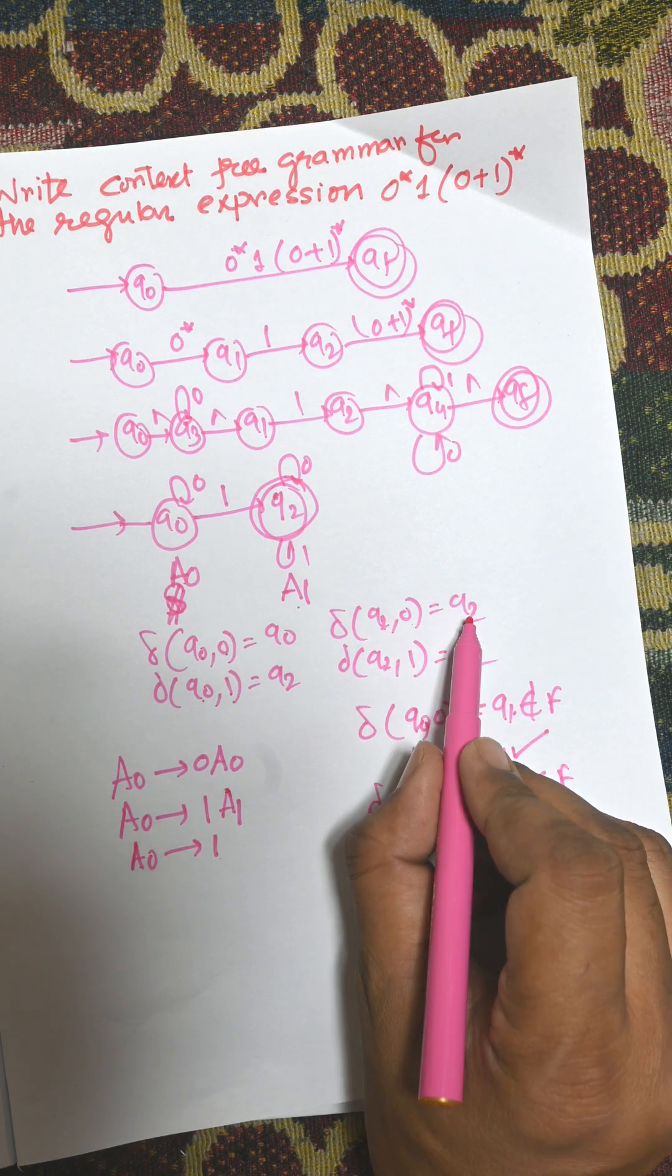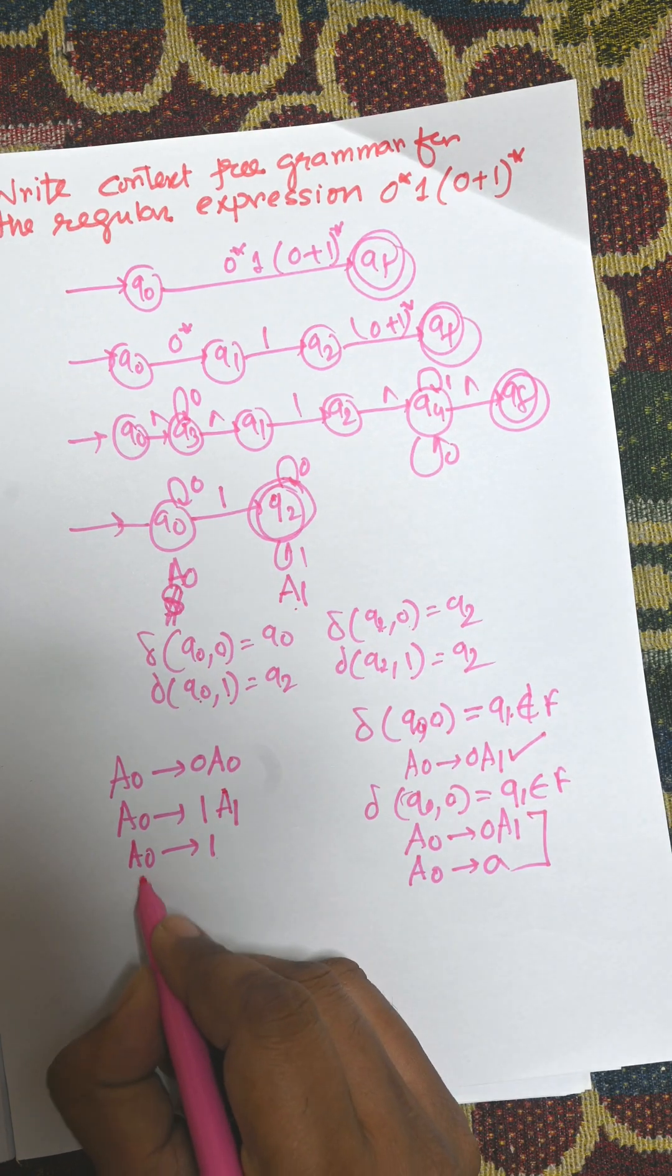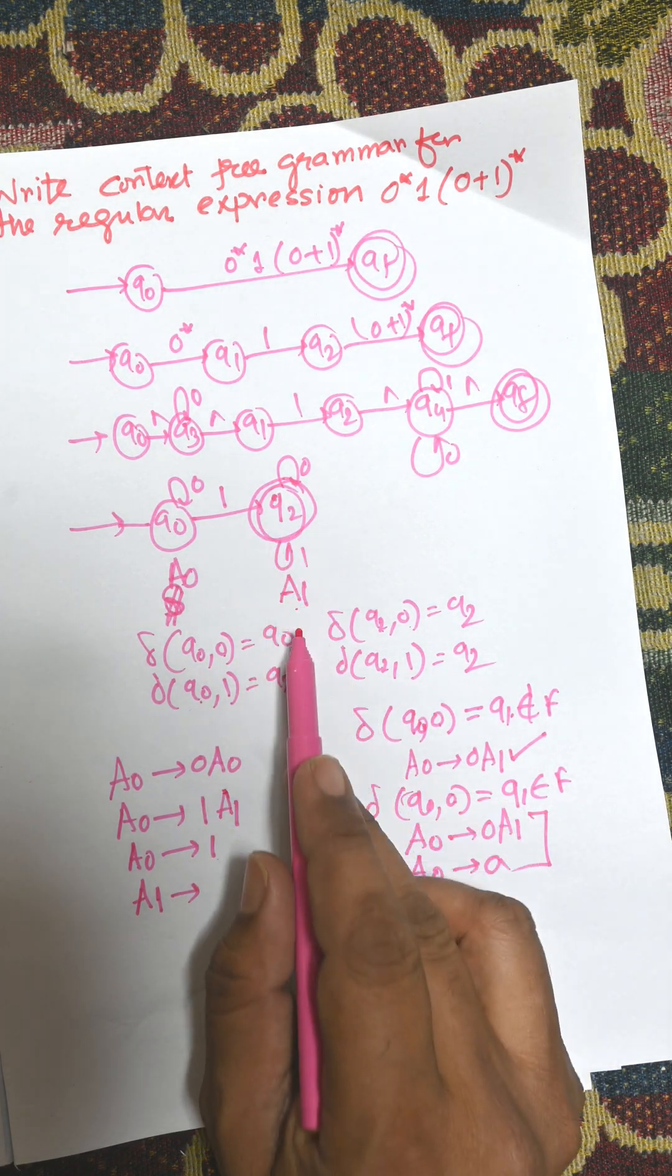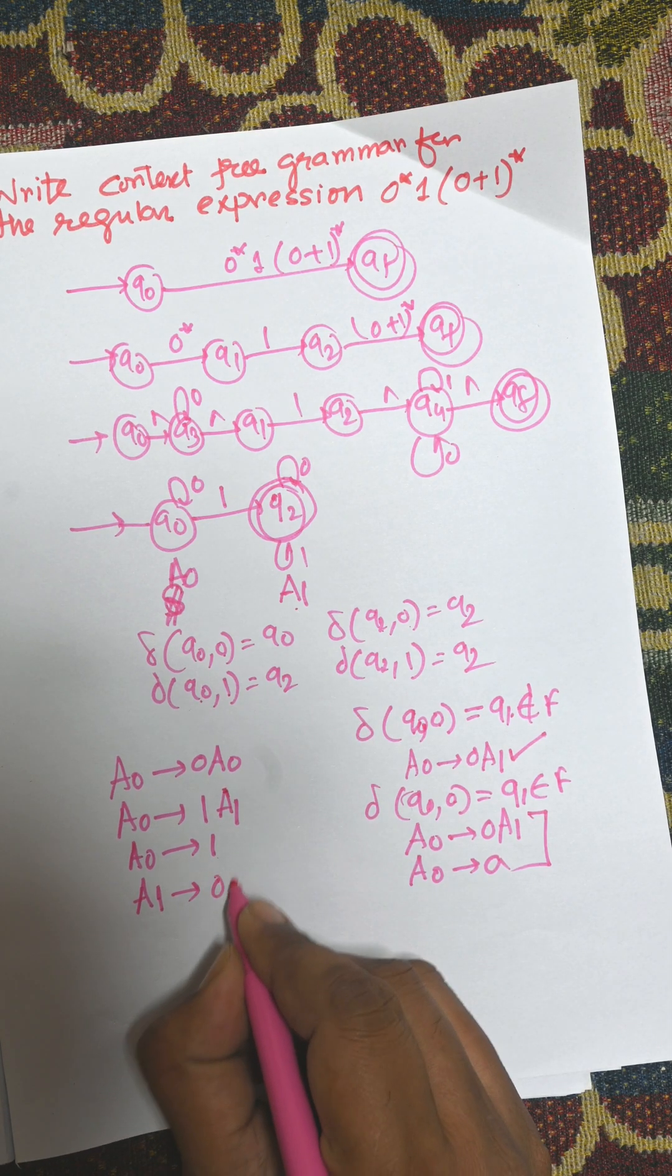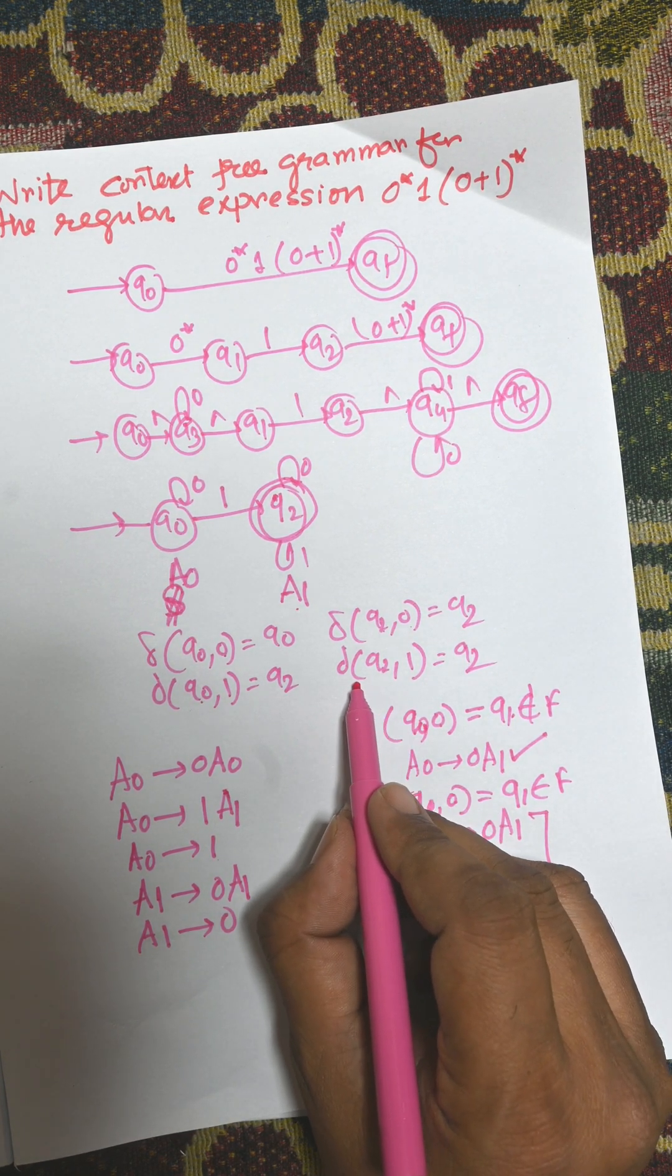Here Q2 to 0 to Q2. Q2 is a final state, so there will be two productions. Q2, that means A1. Q2 is considered as A1, so A1 to 0 A1, and another will be A1 to 0.